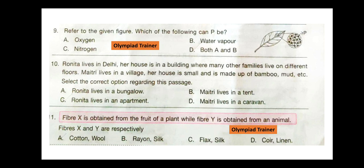Question 10. Ronita lives in Delhi. Her house is in a building where many other families live on different floors. Maitri lives in a village. Her house is small and is made up of bamboo, mud, etc. Select the correct option regarding this passage. The correct answer is option C — Ronita lives in an apartment.